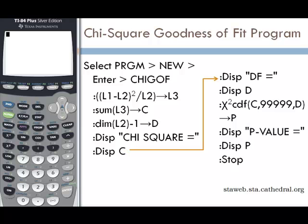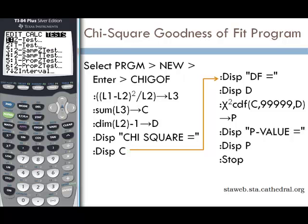We can use our TI-83 or TI-84 calculator to do the chi-squared goodness of fit test, but not all TI-83 and TI-84 calculators come with a pre-programmed chi-squared goodness of fit test. To see if your calculator has this pre-programmed test, you can go to STAT and then scroll twice to the right to TEST, and then go up and see if chi-squared GOF test is listed — it should be listed as option D. If you don't have it, don't worry.